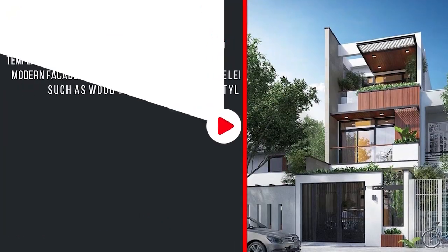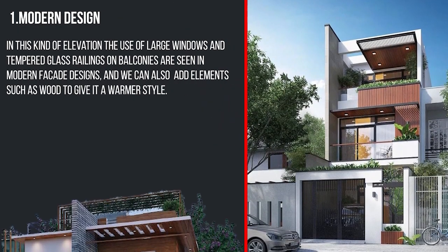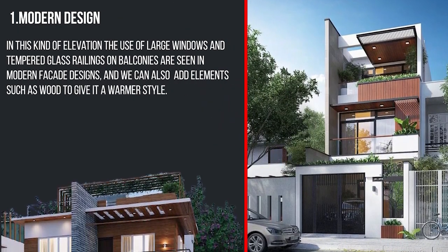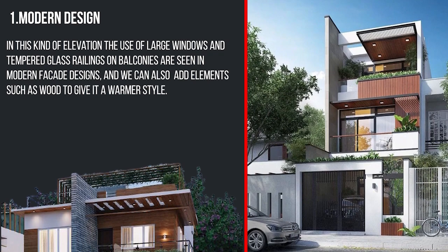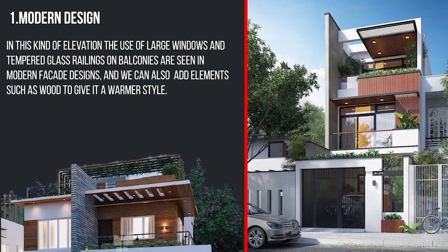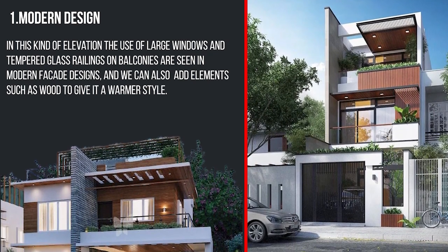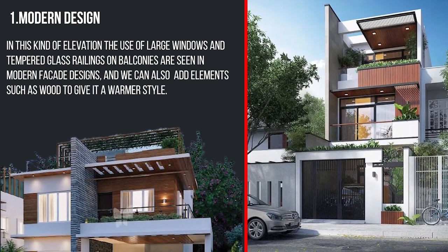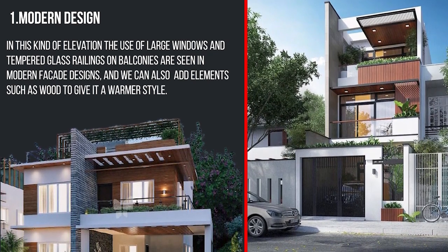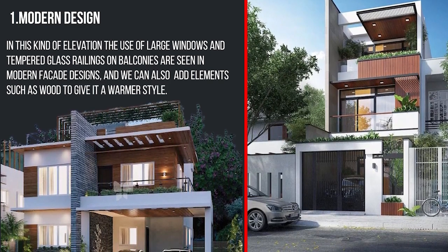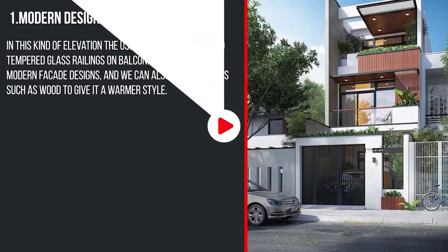The most common front elevation I observe is modern design. In this kind of elevation, the use of large windows and tempered glass railing on balconies are seen in facade design. We can also add elements such as wood to give it a warmer style.